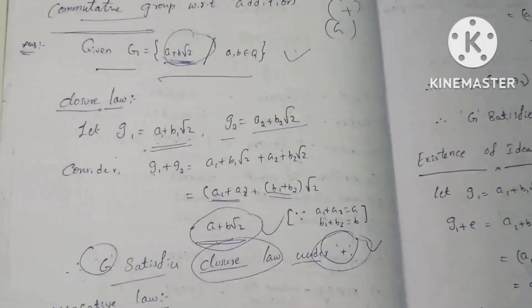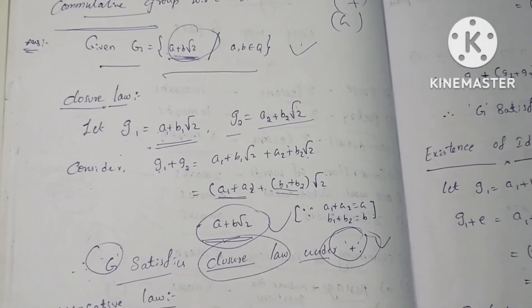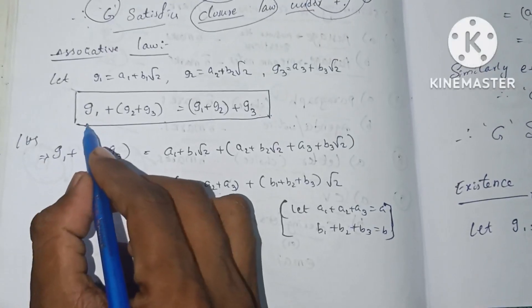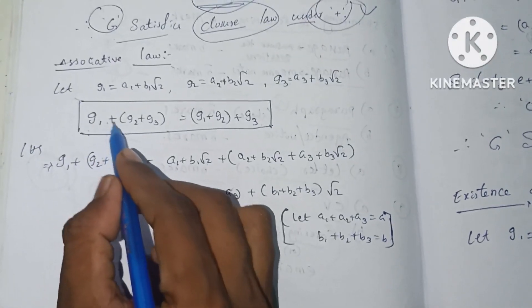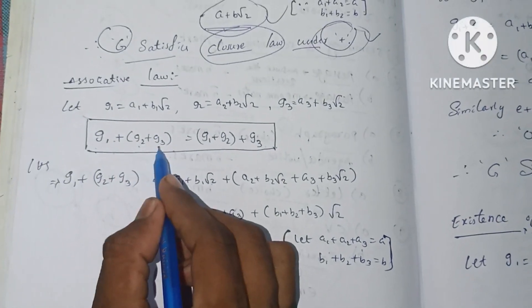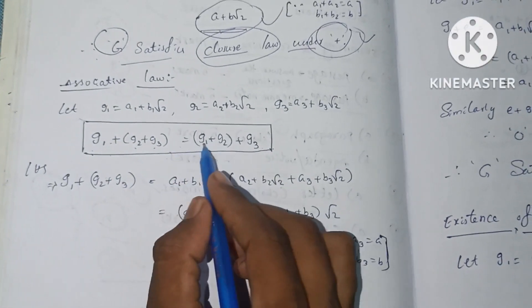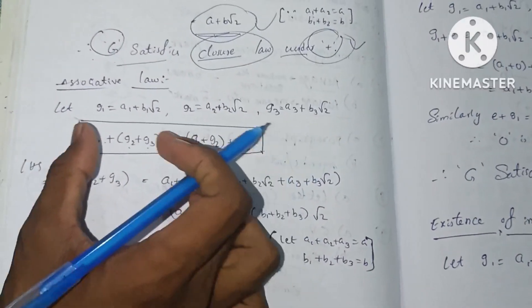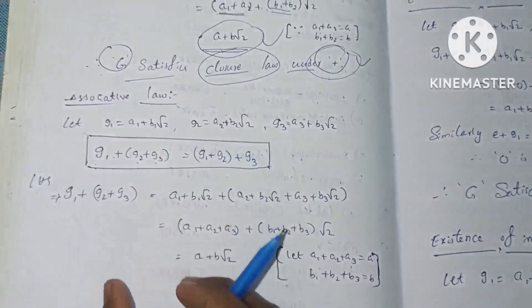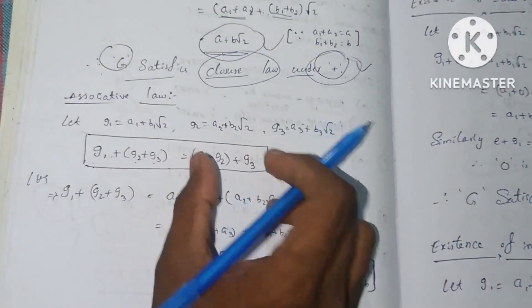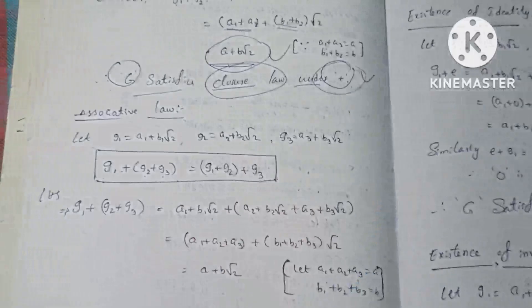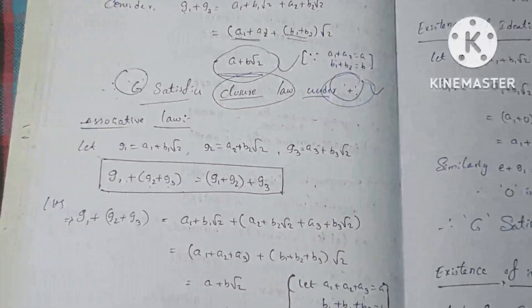The second property is the associative law. The associative law means that g1 plus g2 plus g3 is equal to g1 plus g2 plus g3. We use the LHS value and RHS value and show the two values are equal.